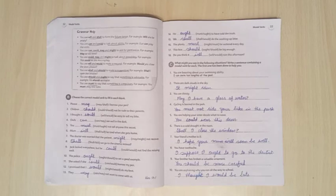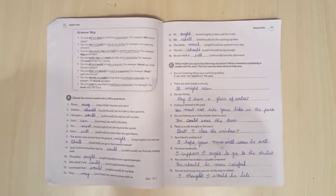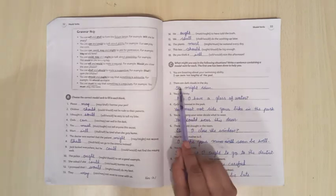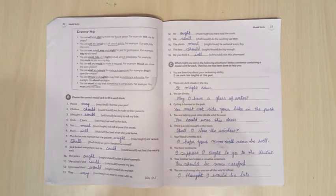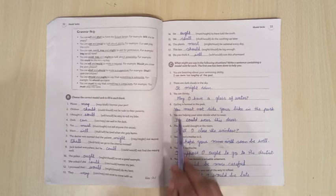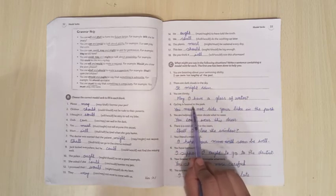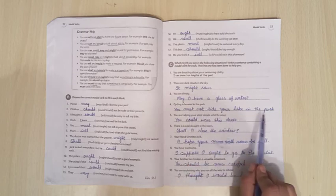Now come to exercise C. You might just say the following situations. Write a sentence containing a modal verb for each. The first one has been done to help you. You are boasting about your swimming ability. Answer will be, I can swim 10 lengths of the pool. There are dark clouds in the sky. It might rain. You are thirsty. May I have a glass of water? Cycling is banned in the park. You must not ride your bike in the park.